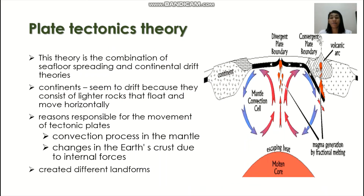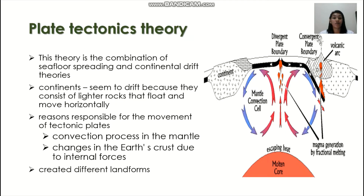The last theory we have is the plate tectonics theory, which is a combination of seafloor spreading and continental drift theory. According to this theory, the continents seem to drift apart because they consist of lighter rocks that float and move horizontally. The reasons responsible for the movement of tectonic plates are: first, the convection process in the mantle. Convection is the transfer of heat and other atmospheric properties by the movement of masses, particularly in an upward direction. The heat from the molten core causes the movement, moving these plates around.